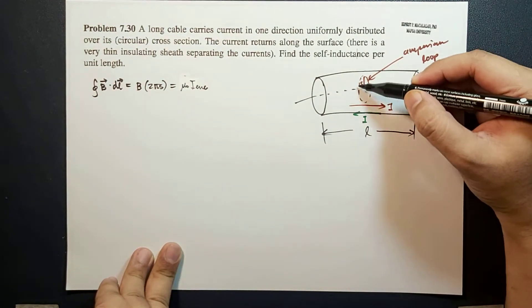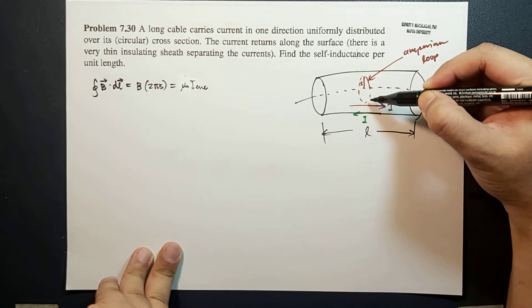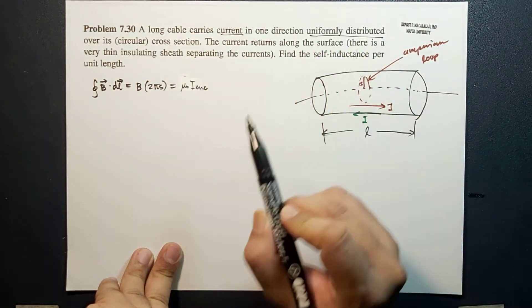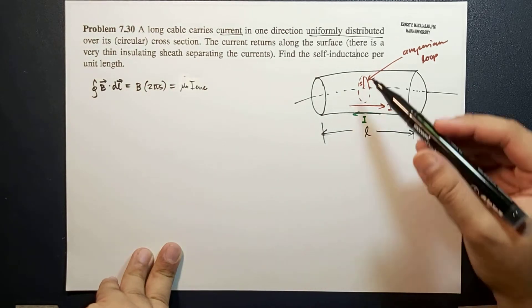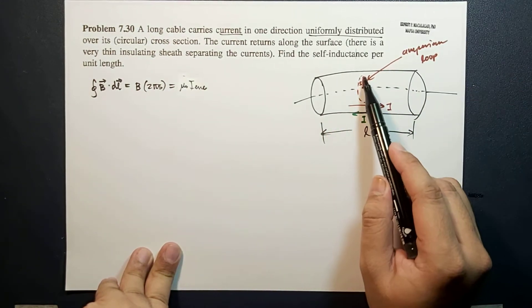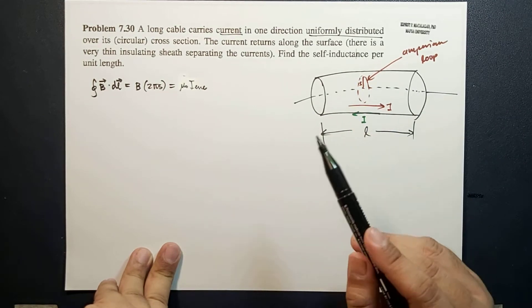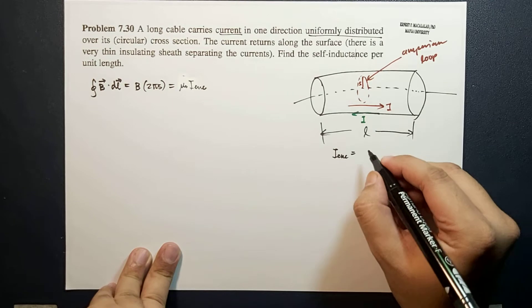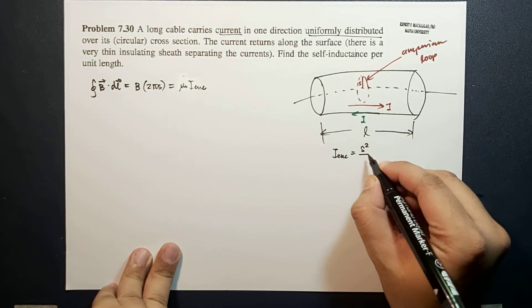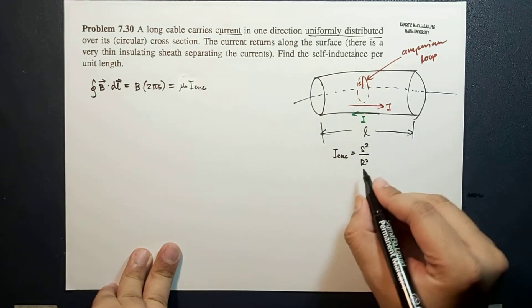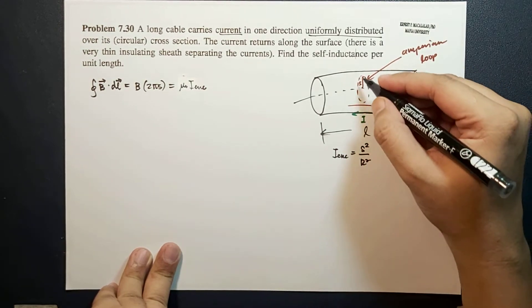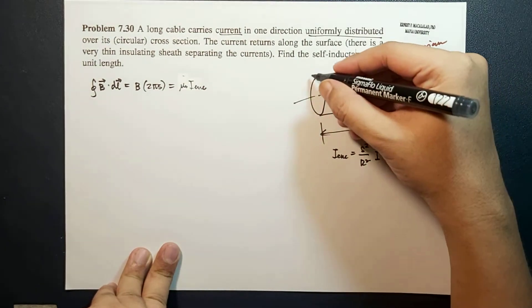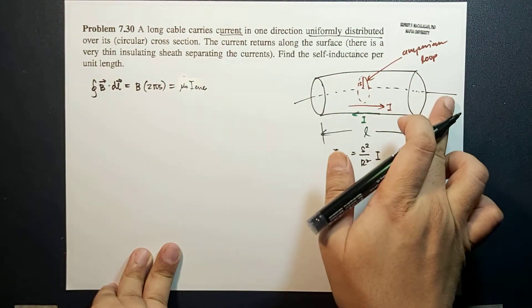But what is I enclosed? Because the current is uniformly distributed over its circular cross-section, that means we just get the fraction of the current that passes through this Ampere loop. The enclosed current will just be a fraction S²/R² times the total current that is flowing through this cross-section.